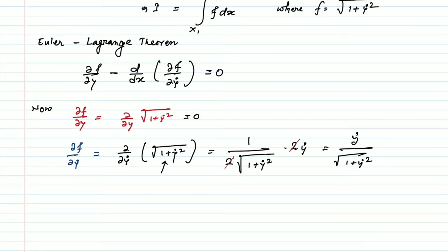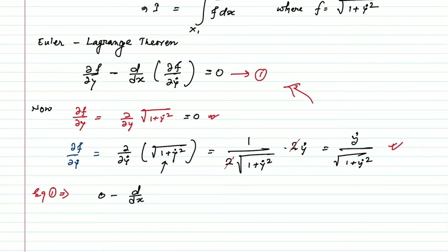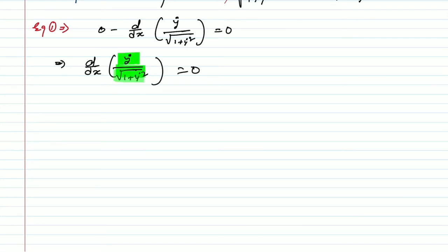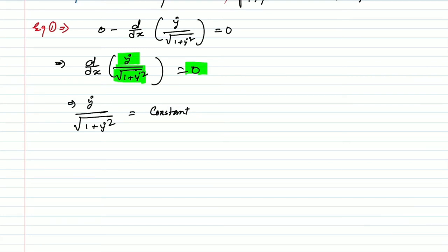Therefore, from the Euler-Lagrange equation (equation 1), substituting these values we get: 0 − d/dx [y_dot / √(1 + y_dot²)] = 0, which implies d/dx [y_dot / √(1 + y_dot²)] = 0. Since the derivative of this expression is zero, it means y_dot / √(1 + y_dot²) must be a constant — say k.